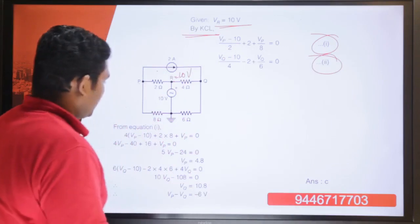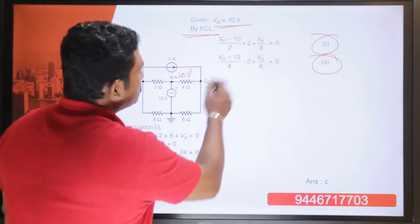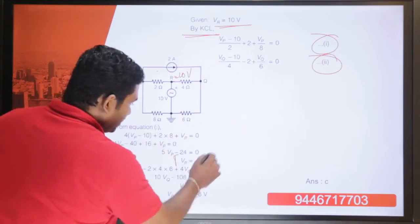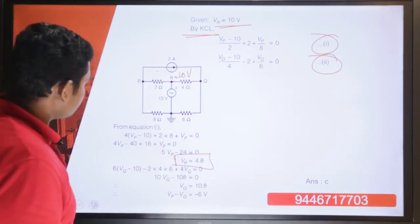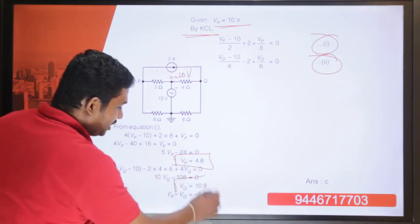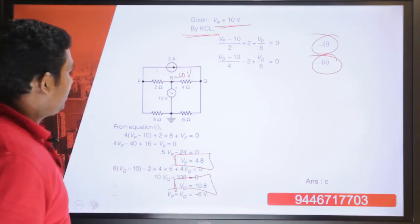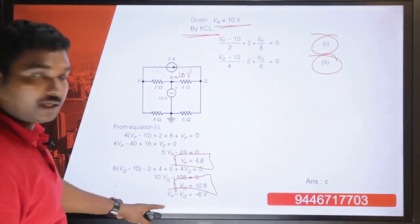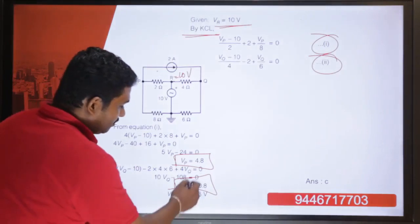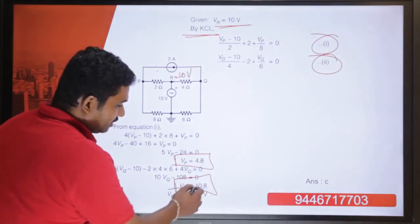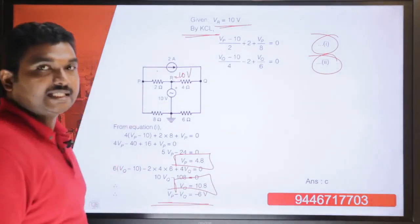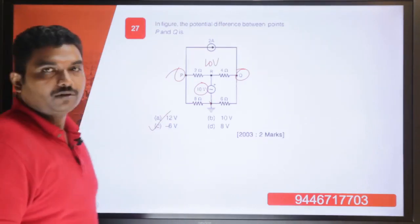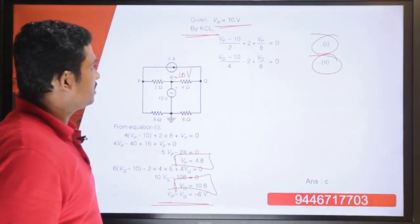Solving these two equations in two unknowns Vp and Vq, we get Vp equal to 4.8 volt and Vq equal to 10.8 volt. The potential difference between P and Q is Vp minus Vq, which is 4.8 minus 10.8, giving minus 6 volt. Our answer is choice C, which is minus 6 volt. This concludes question 27.